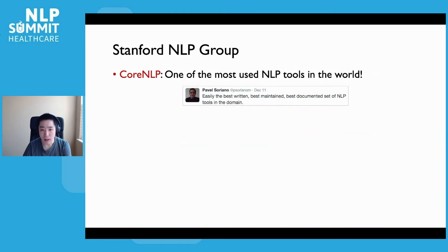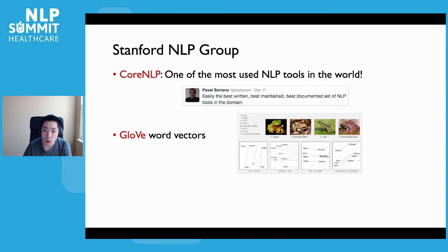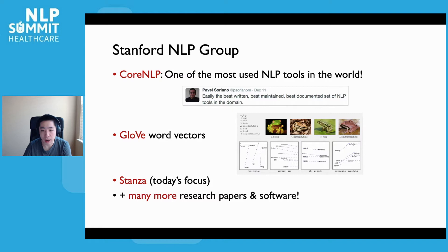Over the years, the Stanford NLP group has created several popular and widely adopted toolkits and software packages. Among them, the most widely known one is the Stanford CoreNLP Java library, which is one of the most used NLP tools in the world and has powered numerous research and industrial applications since its release. Another great example is the GloVe word vectors, which has been the foundation of many deep learning NLP research works. Then we have Stanza, the more recent Python NLP toolkit, which will be the focus of my talk today.